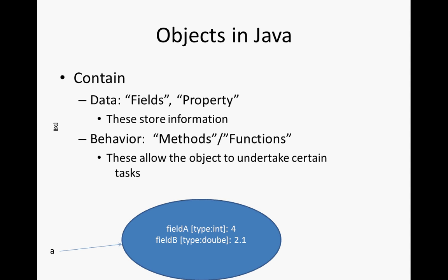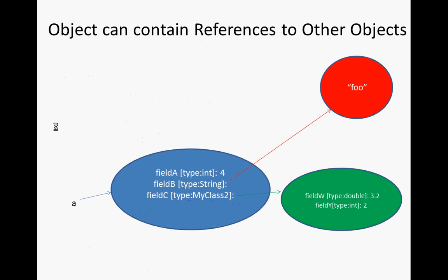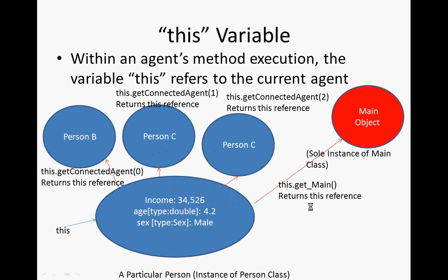Objects can contain references to other objects. This agent might contain a reference to its name — an object that has its name encoded as a string. The keyword 'this' refers to who we are: if we're executing code associated with an object, 'this' has a certain value — it refers to the current object whose code is being run right now.